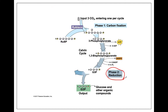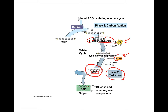Our second phase is reduction — this is where we're going to use some of our energy. We're going to take our six 3-phosphoglycerate molecules and give each one an ATP and an NADPH, so we're using six of each. After many steps where these molecules change shape, we are going to get six molecules of G3P. This sugar molecule is the output — what we were trying to make. Six molecules times three carbons each gives us a total of 18 carbons.